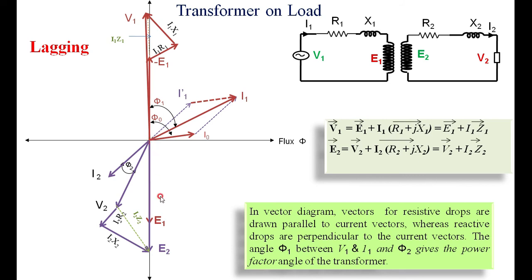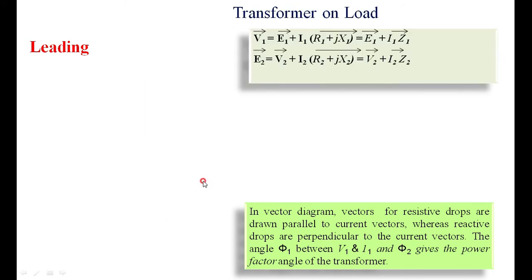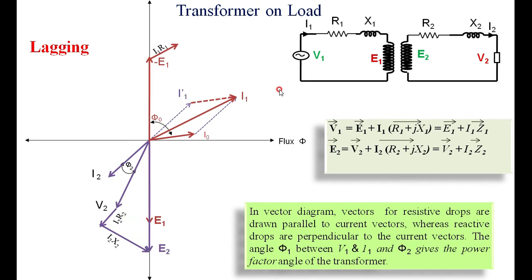This is how you draw the vector diagram for lagging power factor. Start with E1 and minus E1, then place V2 and I2 depending on whether the load is lagging or leading. Now we take up the vector diagram for leading power factor. The equations remain the same: V1 = E1 + I1(R1 + jX1) and E2 = V2 + I2(R2 + jX2). The only difference is that here I2 is leading V2 instead of lagging.